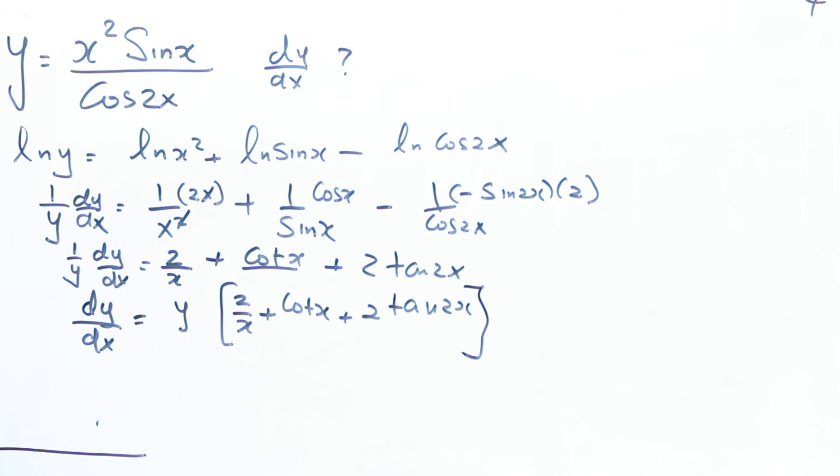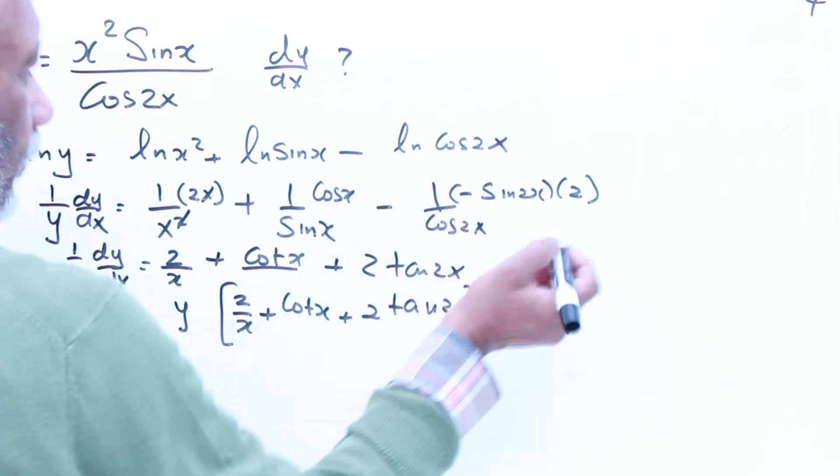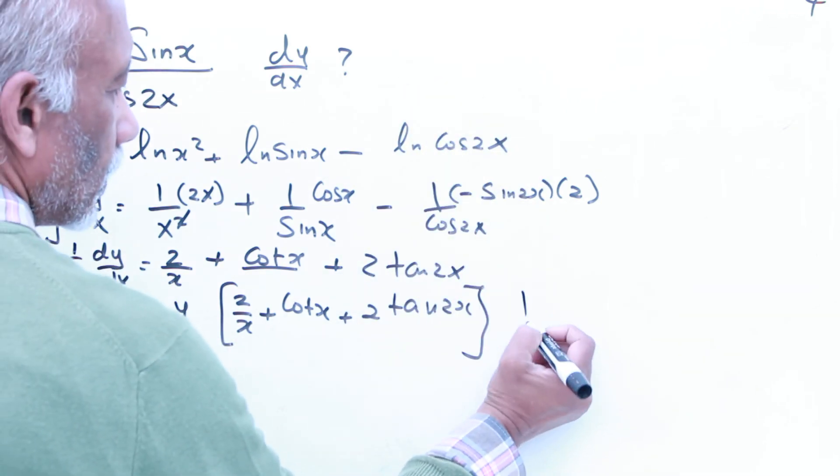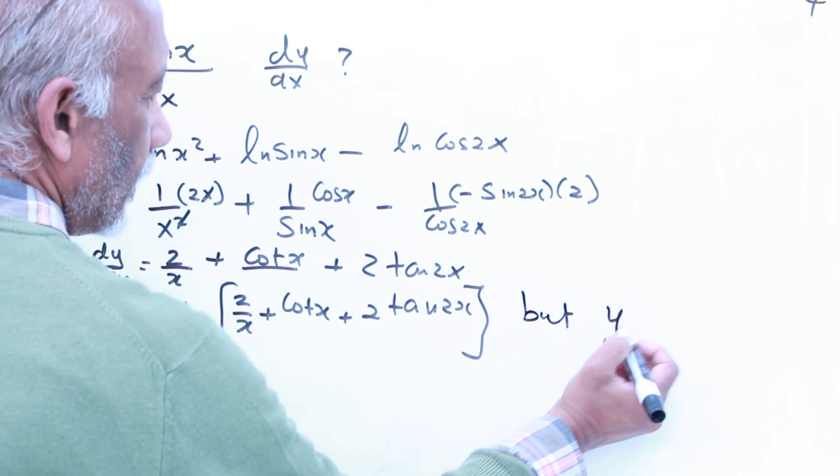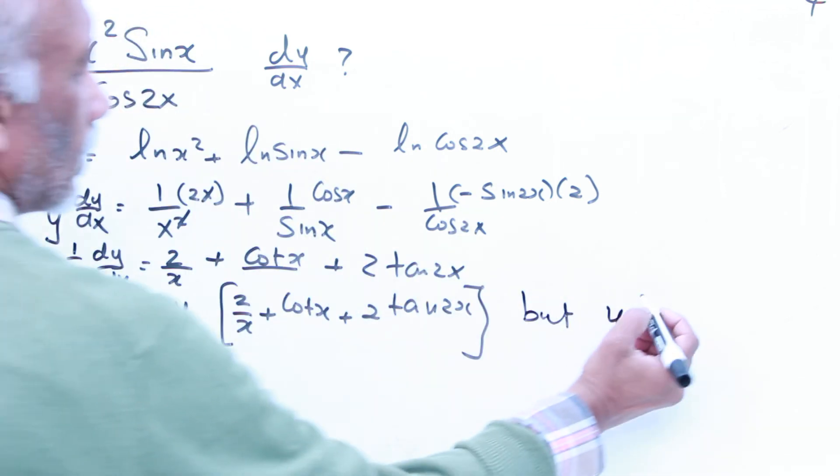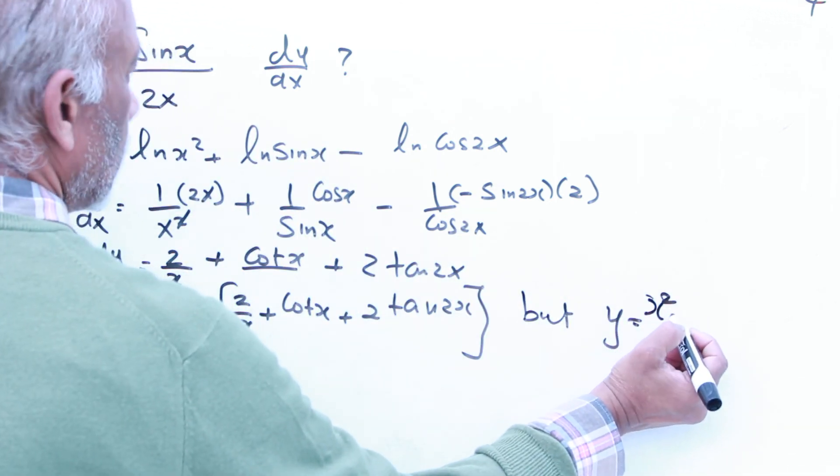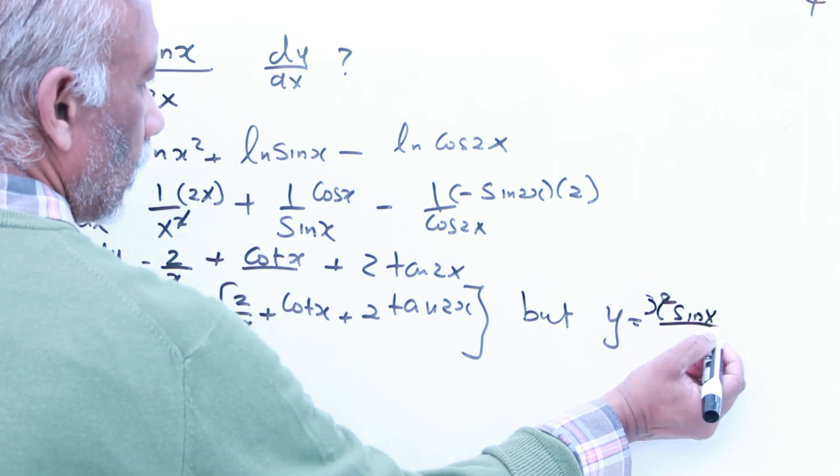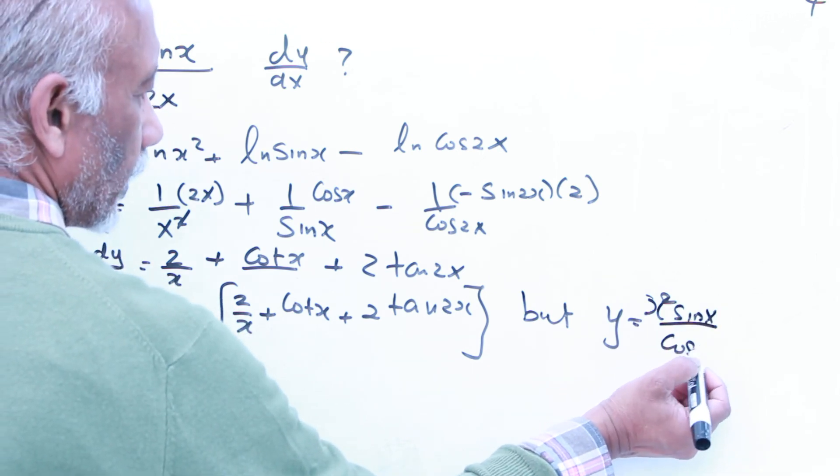But, we know y, we know that one, x squared sin x over cos 2x.